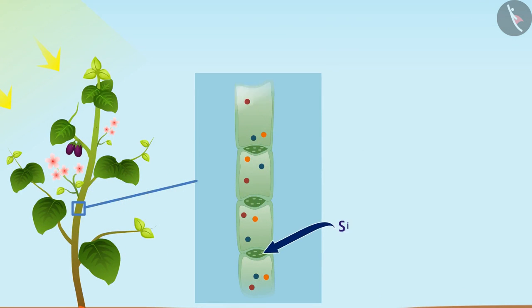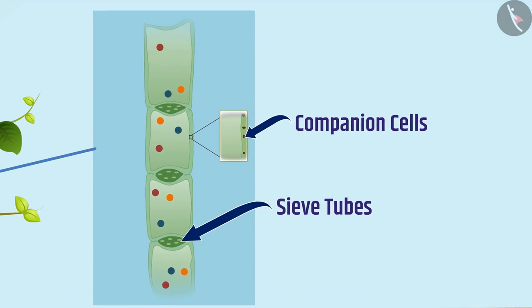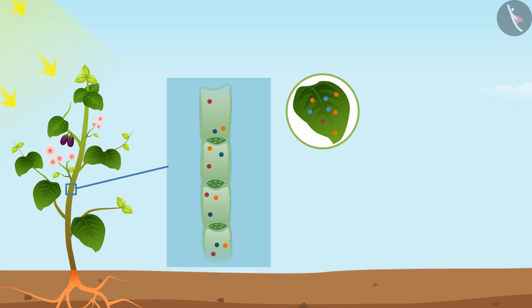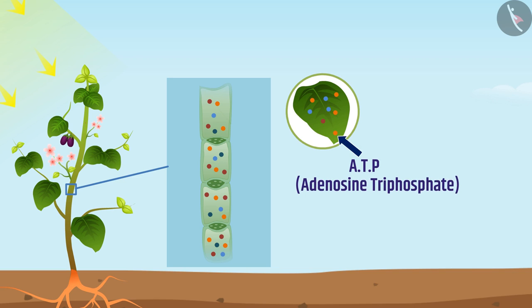Phloem consists of sieve tubes and companion cells. The transportation of soluble products takes place in the sieve tubes with the help of adjacent companion cells. In plants, the transport of food takes place actively with the help of an energy molecule called ATP present in the companion cells. The soluble products produced in the leaves enter the phloem by using ATP, that is adenosine triphosphate, which increases the concentration of soluble products in the phloem.